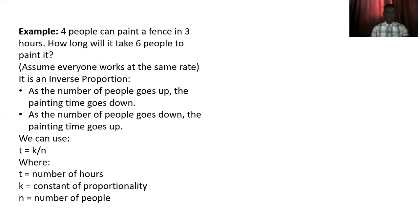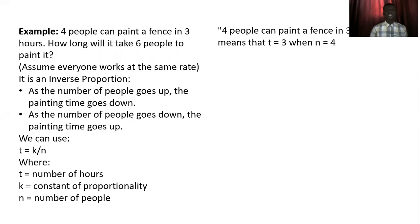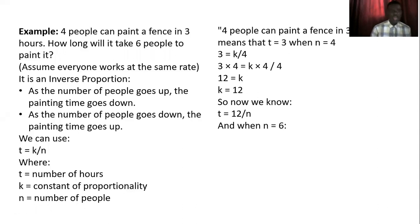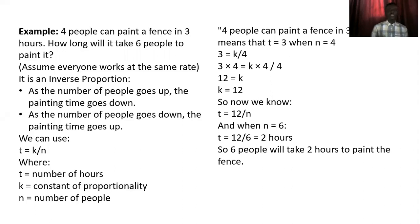Four people paint the fence in three hours, so t equals three and n equals four. Substituting: three equals k divided by four. Multiplying both sides by four gives k equals twelve. Now, t equals twelve divided by n. When n equals six, t equals twelve divided by six, which equals two hours. So six people will take two hours to paint the same fence that four people painted in three hours.